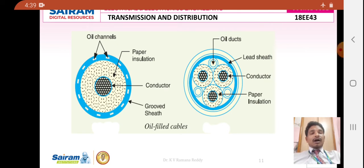In order to overcome the voids at the hard insulating material called lead sheath, oil channels or oil ducts are placed there. Through these oil channels or oil ducts, we are supplying oil thereby closing the voids and increasing the breakdown strength.